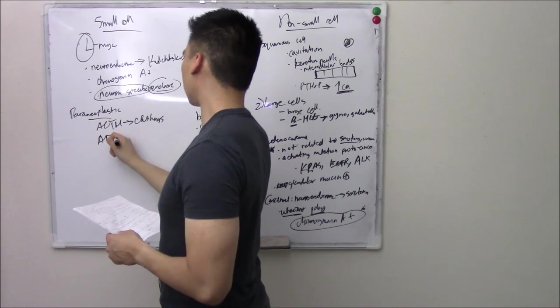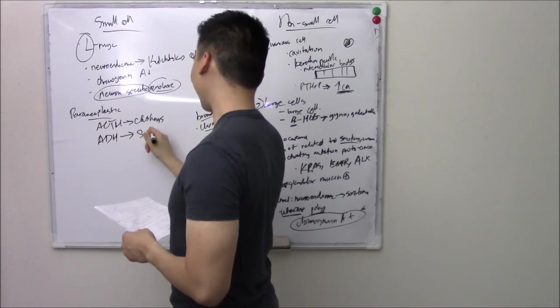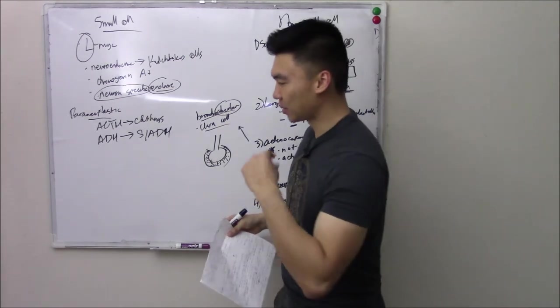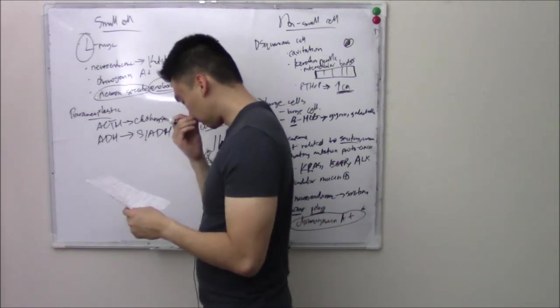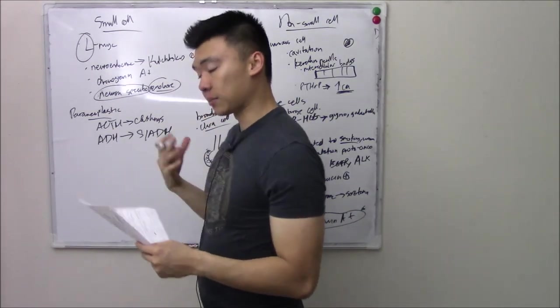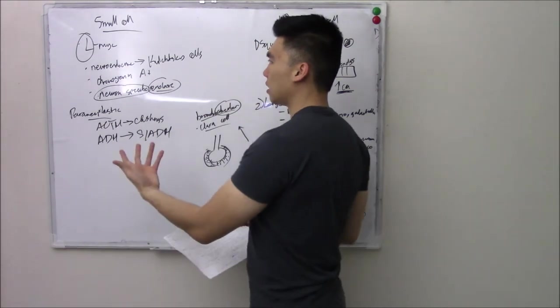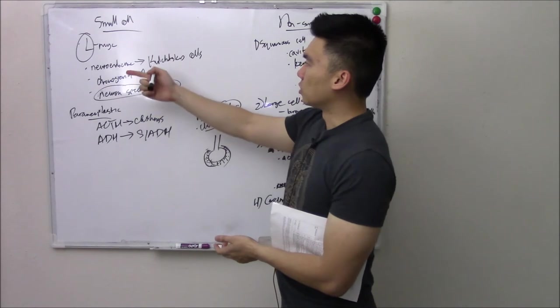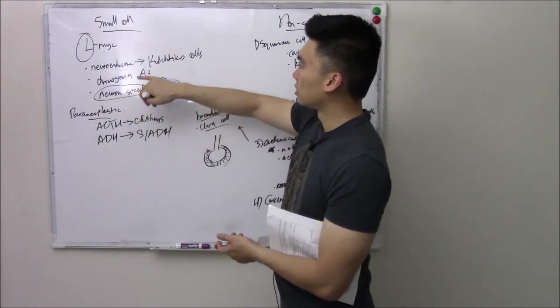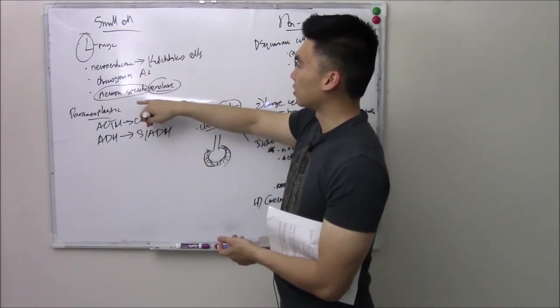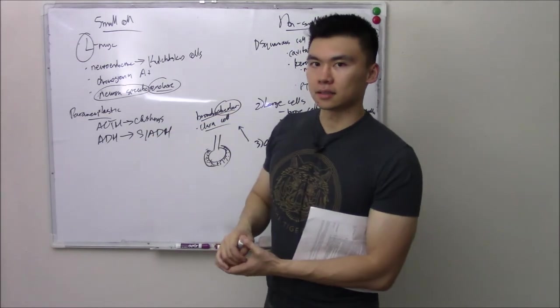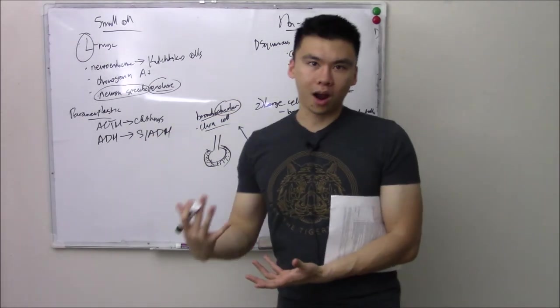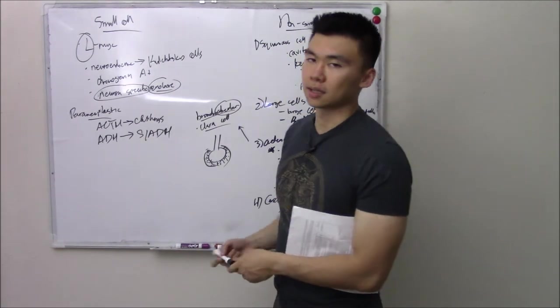It can release ADH. What do you call too much ADH? SIADH. Have you done our renal block? Pause the video. Tell me everything you know about SIADH. So you can make a step-like question from this. The patient comes in. Lung cancer. You do a biopsy. You see small blue cells that are chromogranin A positive, neuron-specific enolase positive. And then the patient is hyponatremic. Why is the patient hyponatremic? SIADH.